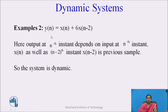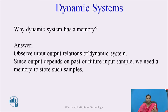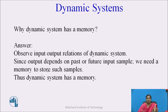Another example is a discrete dynamic system: y[n] = x[n] + 6x[n−2]. Here the output at any nth instant depends on the input at the nth instant as well as at the (n−2)th instant — it depends on the present as well as a previous sample. Such a system is a dynamic system. Dynamic systems have memory because the output depends on past and future input samples, so memory is required to store such samples.